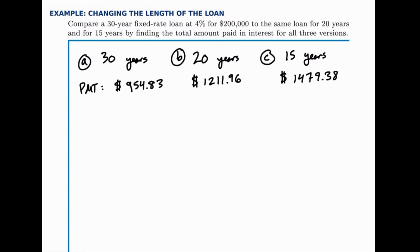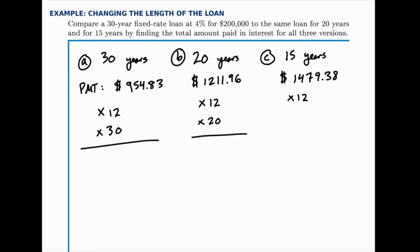But it turns out the amount of interest paid will drop as you go to a shorter and shorter loan, because you're paying it back faster, so there's less time for the interest to accrue. So in each case, we'll multiply by 12 to get the amount paid per year, and then multiply by the number of years — by 30 in the first case, by 20 for the 20-year mortgage, and by 15 for the last.